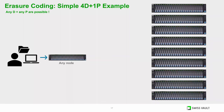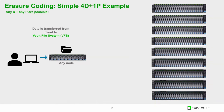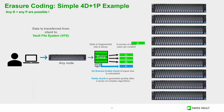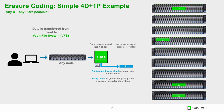The Vault File System generates data and parity chunks to build a robust archive. VFS nodes are peer-to-peer, so any node can receive or retrieve data. The data and parity chunks are distributed across many disks in the network.